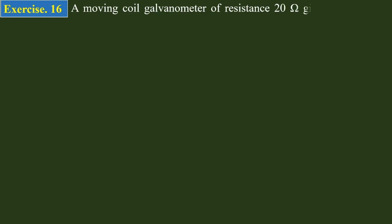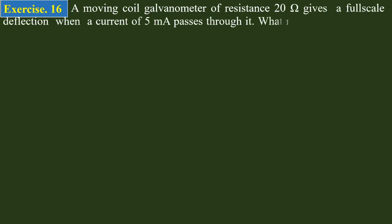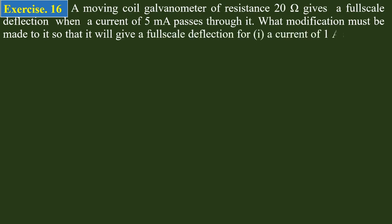The galvanometer gives full-scale deflection when a current of 5 milliamperes passes through it. What modification must be made so that it will give a full-scale deflection for a current of 1 ampere and a potential difference of 100 volts?